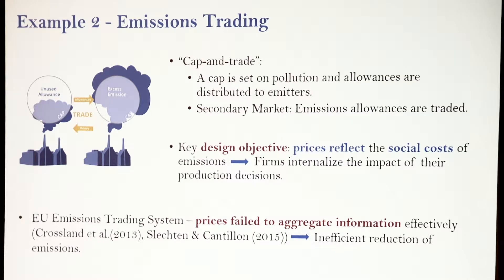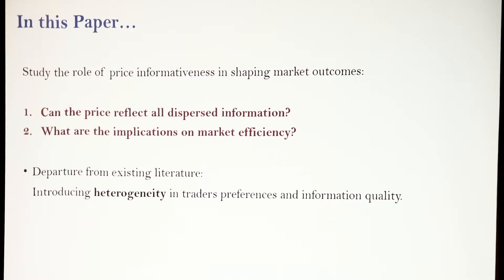The idea of this market is to put a price on pollution and to reflect each firm's abatement cost. Each firm's abatement cost is private information, and we want the price to reflect that private information and account for the cost of pollution, so firms internalize the impact of their production. Studies about the EU emissions trading system — the first and so far largest such system — show that in the implementation and first compliance periods, prices failed to aggregate information efficiently, leading to inefficient reduction of emissions. We introduce heterogeneity in agents' preferences and in the quality of their information — their precision.